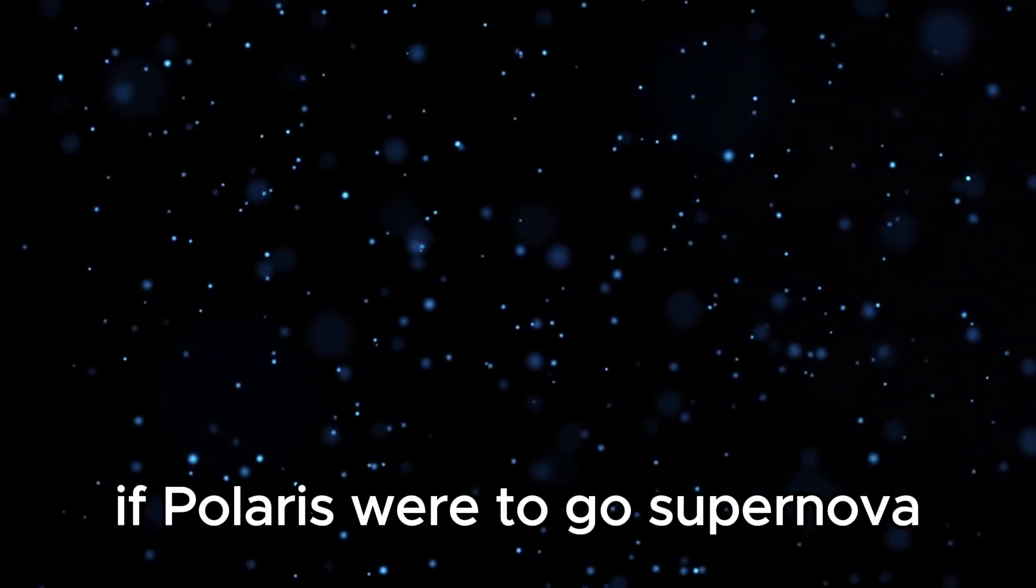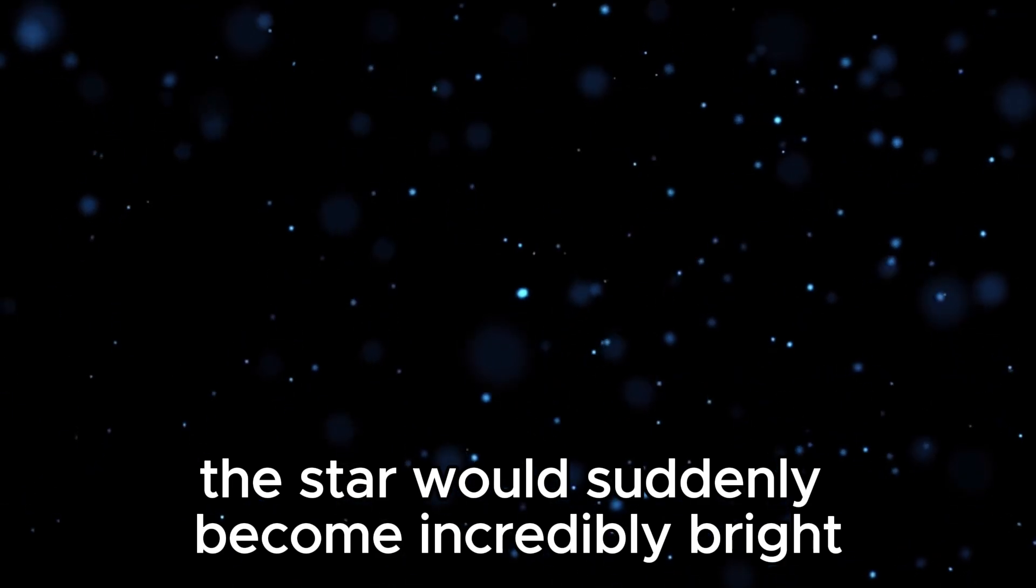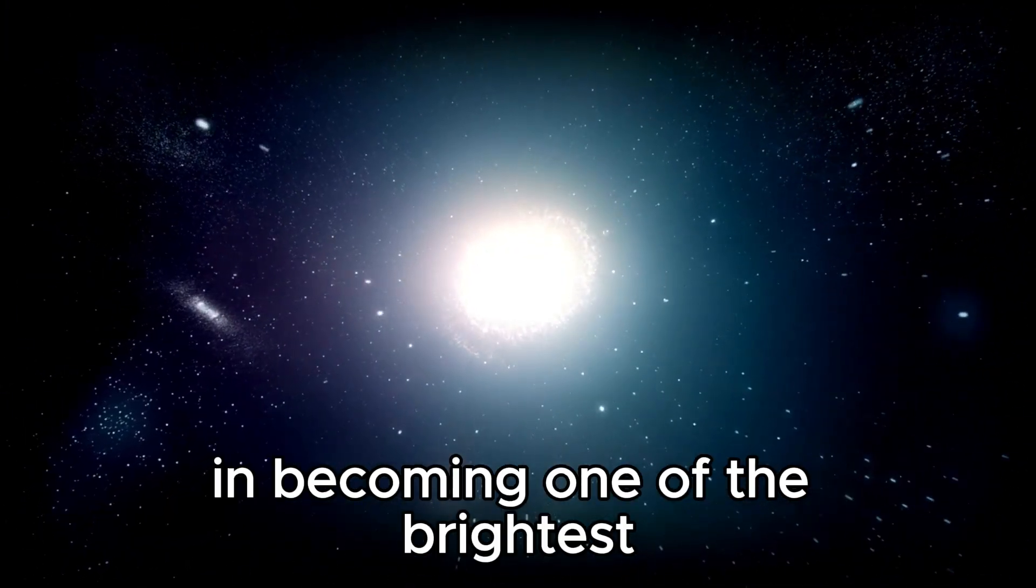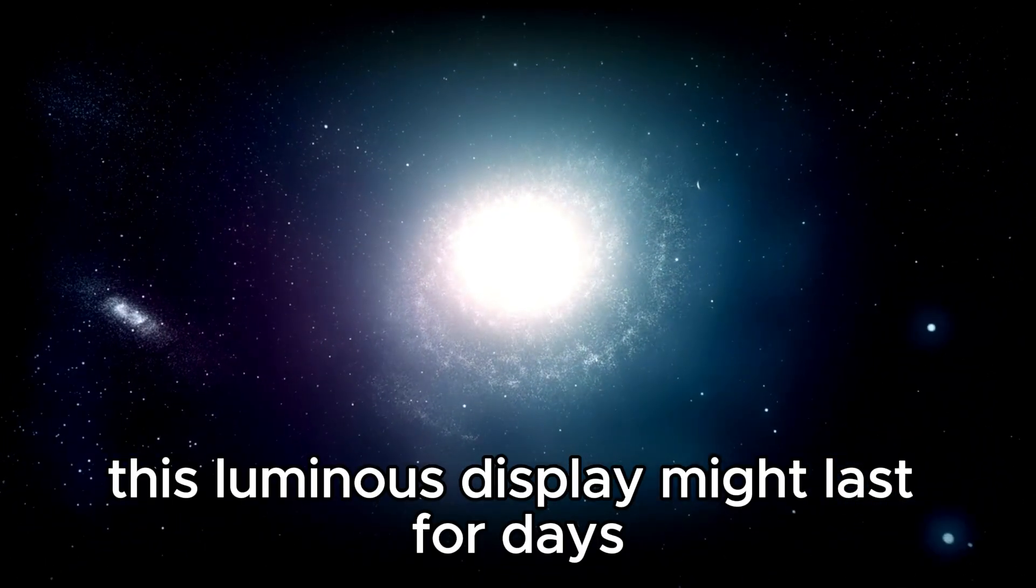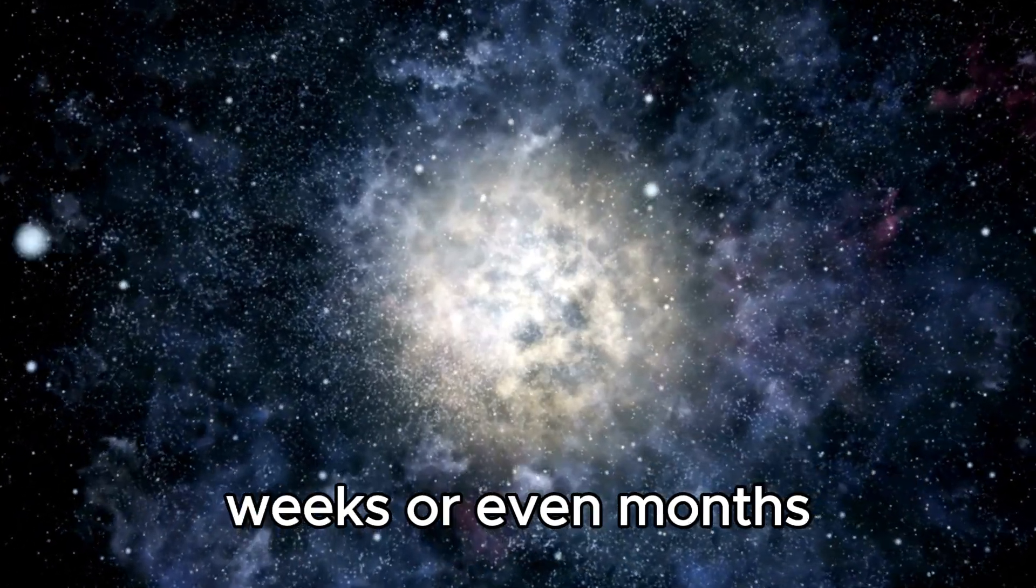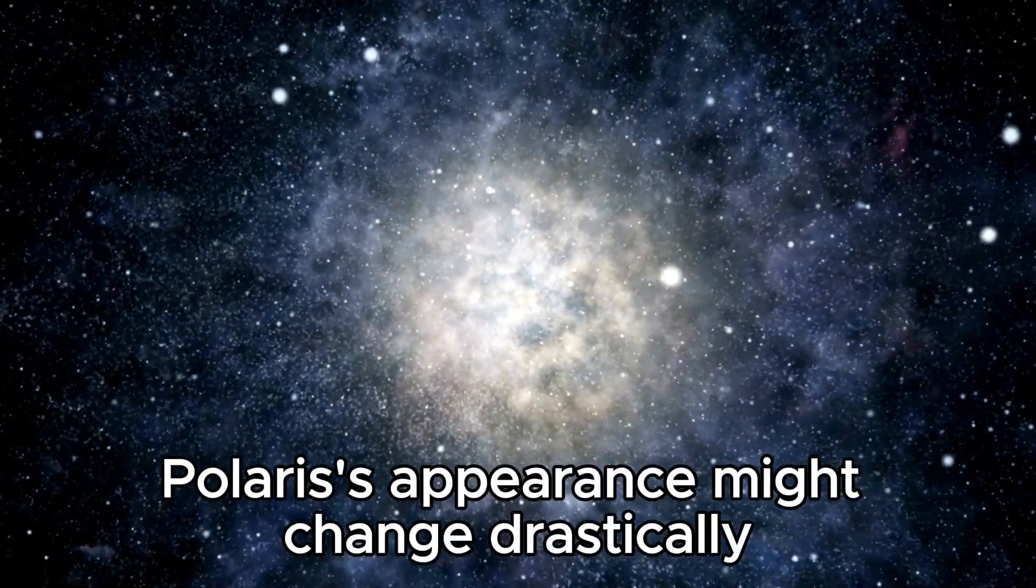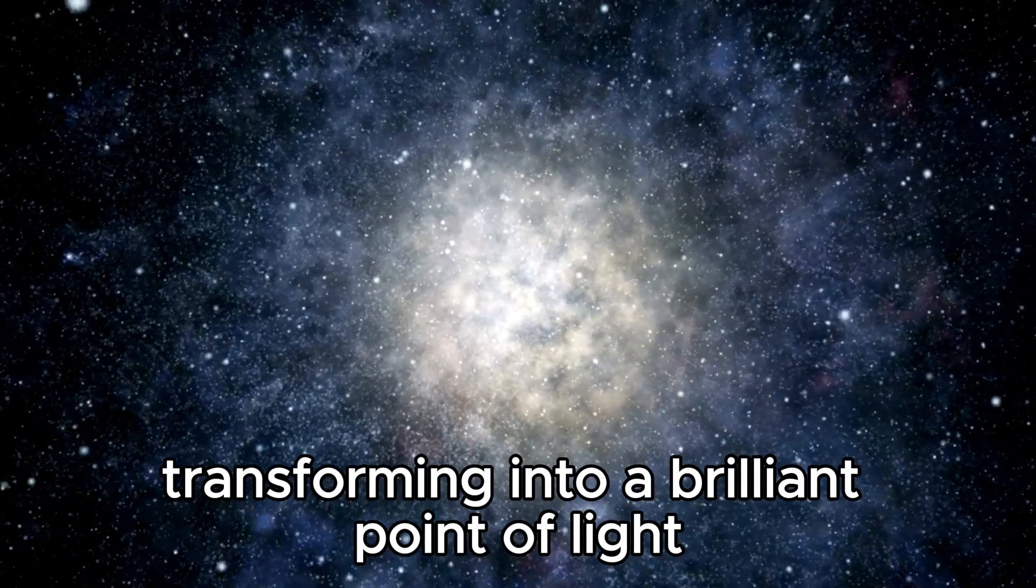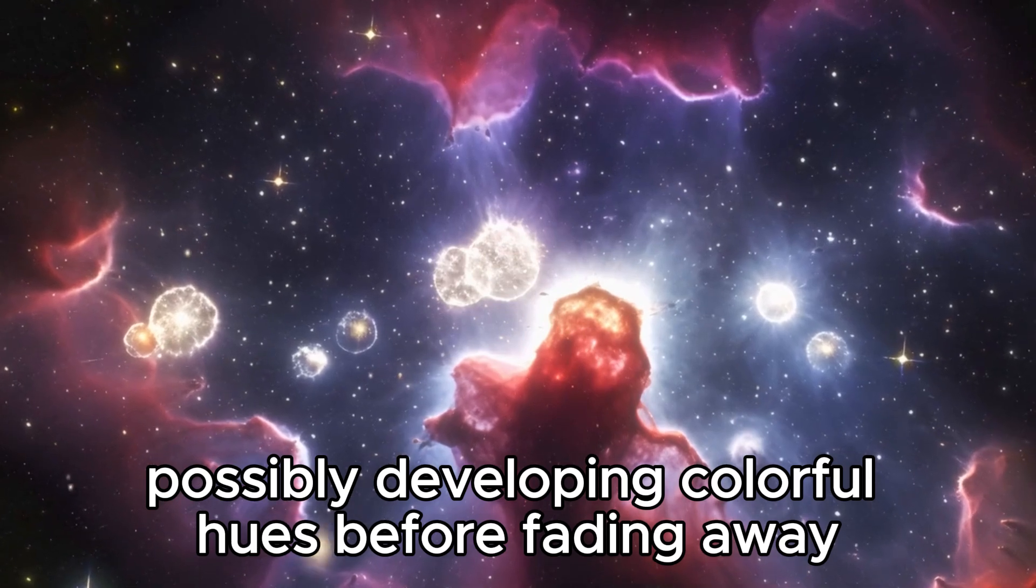If Polaris were to go supernova, it would likely be a spectacular event in our sky. The star would suddenly become incredibly bright, potentially outshining the Moon and becoming one of the brightest objects in the night sky. This luminous display might last for days, weeks, or even months. Polaris's appearance might change drastically, transforming into a brilliant point of light or a transient object, possibly developing colorful hues before fading away.